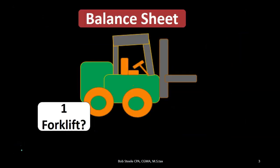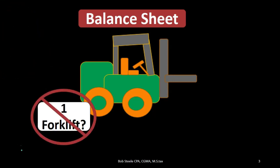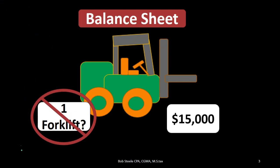The first question is how are we going to record this forklift on the balance sheet? We can't put it on as one forklift — we have to put it on in terms of dollars. We purchased the forklift for $15,000, so we're going to put it on the books at $15,000. This is similar to any unit conversion — we're converting units to dollars — and that conversion can cause us problems as we go through inventory tracking.